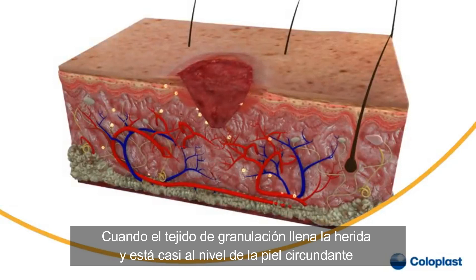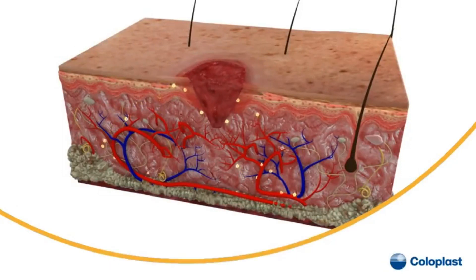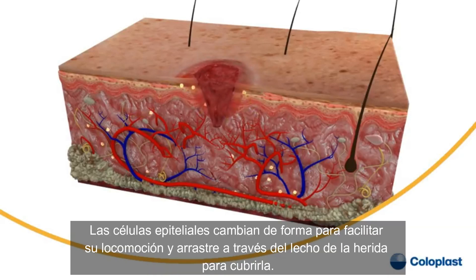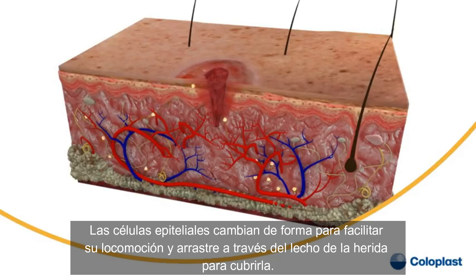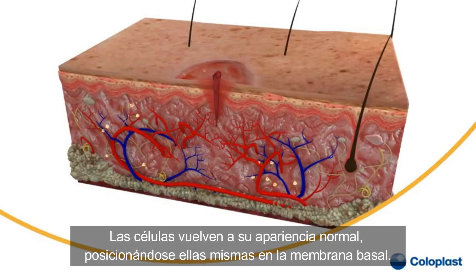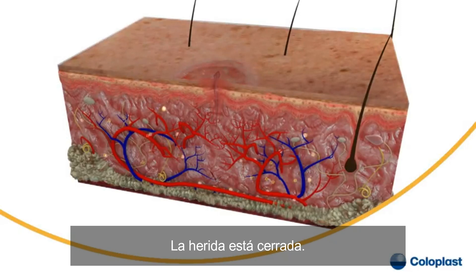When the granulation tissue filling the wound is almost at level with the surrounding skin, re-epithelialization starts. The epithelial cells change shape to facilitate locomotion and crawl across the wound bed to cover it. Migration stops as soon as cells regain contact. The cells change back to their normal appearance and reattach themselves to the basement membrane. The wound is closed.